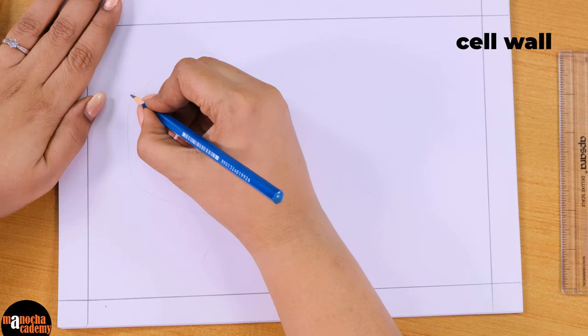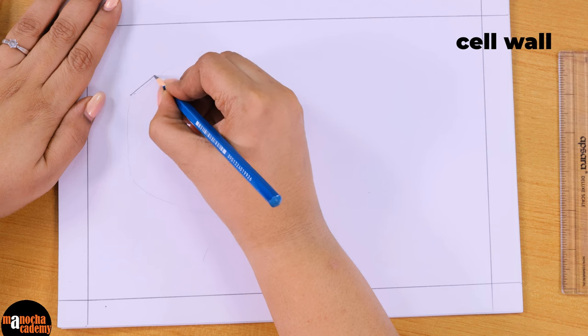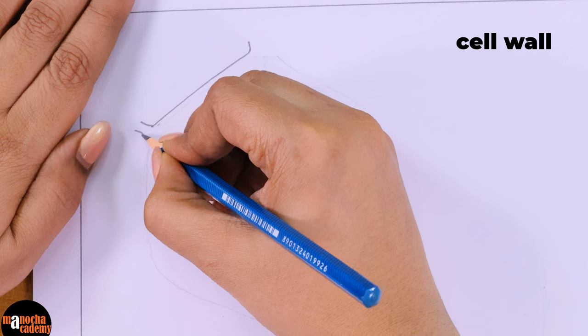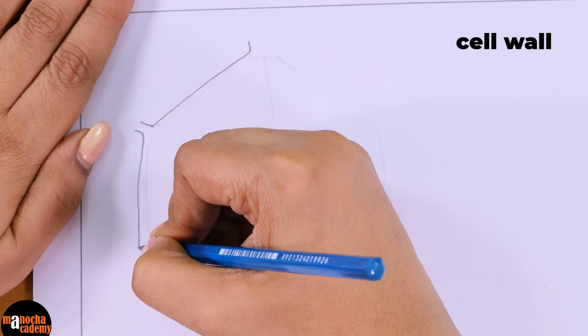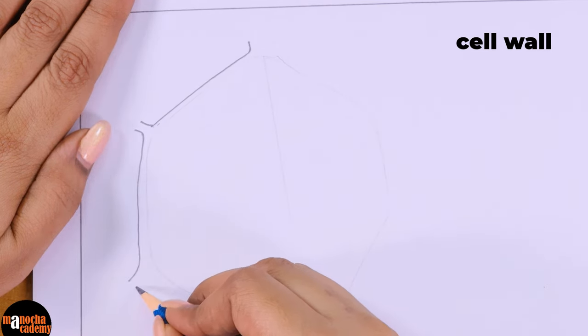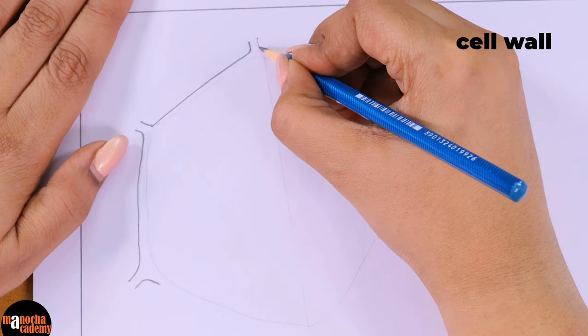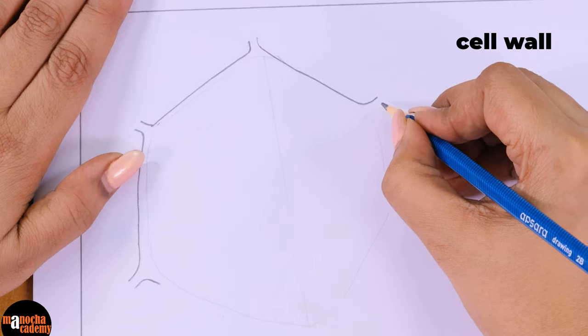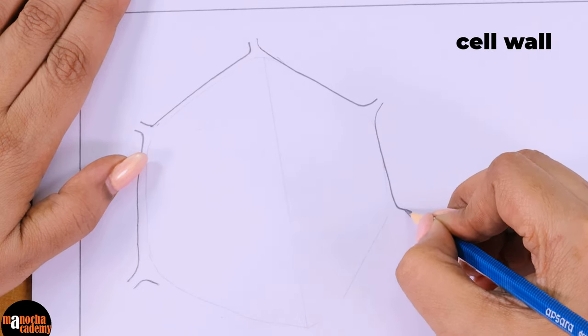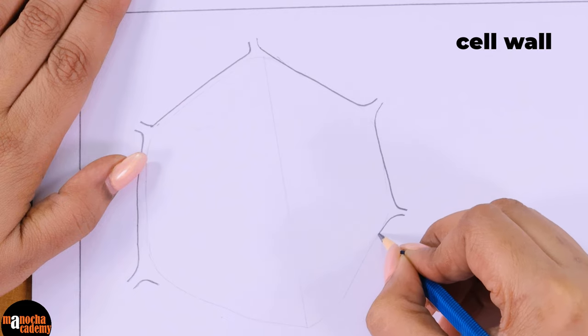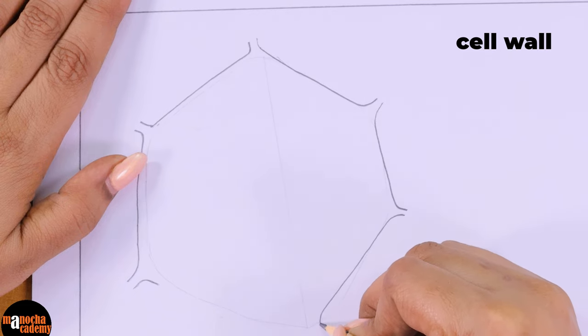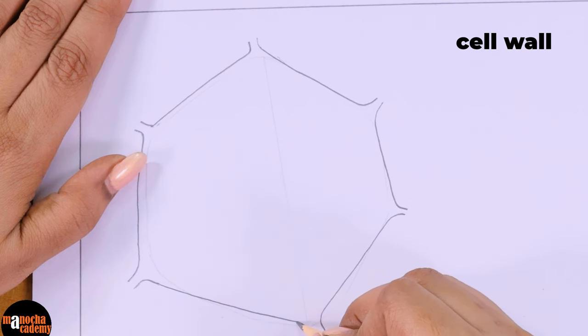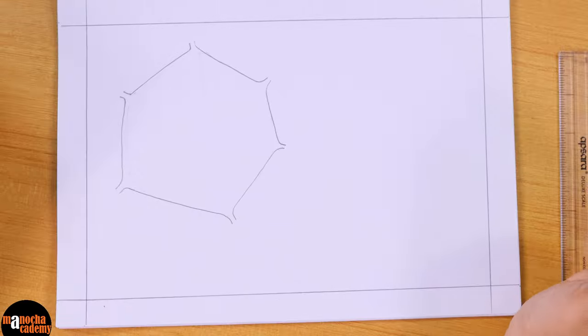For the cell wall, we will simply draw a few lines and these lines will have endings or corners like this, because in a plant cell, the cell wall of the adjacent cells remain connected. Do not bother too much about the shape; the shape can be a little here and there.